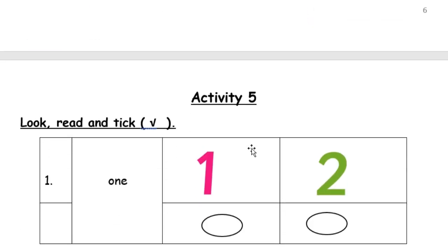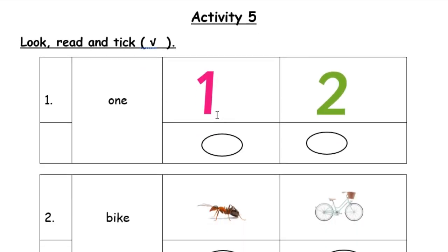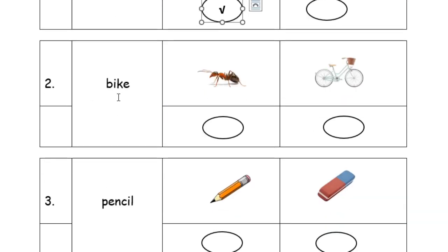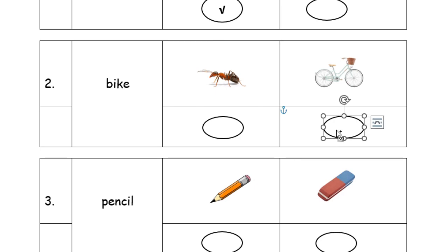Move to Activity 5. Now you need to read — there is no listening. Look at the picture and choose the correct answer. Number 1 — correct. Number 2 is Bike. Is this the bike? No, it is not. The bike is this one. Number 3 is Pencil. Tell me the answer — yes, excellent, this is a pencil. Number 4 is Snake. Be careful because they are similar. Yes, this is a snake, and this is the correct answer.